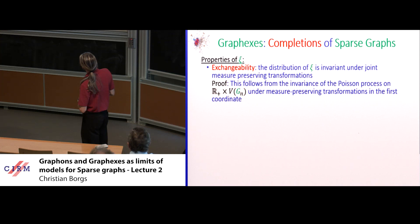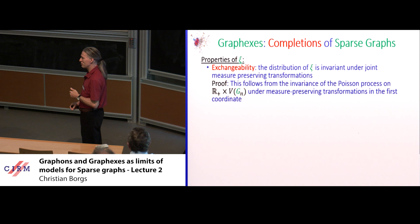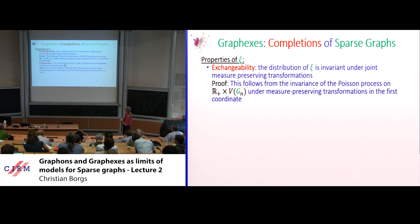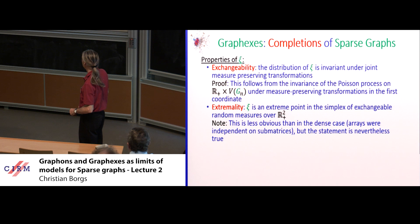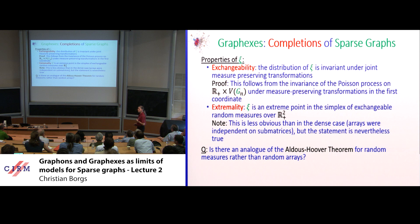What are the properties of this random measure? It's exchangeable, because we forgot the vertex label and only kept time labels. Replacing interval [0,t] with an interval obtained by a measure-preserving transformation leaves the Poisson process on the real axis invariant. The measure is also extremal for roughly the same reason as before, though things become technically complicated when dealing with processes.